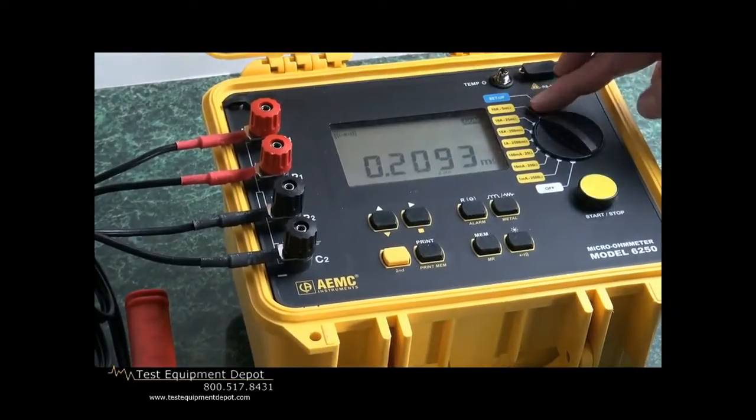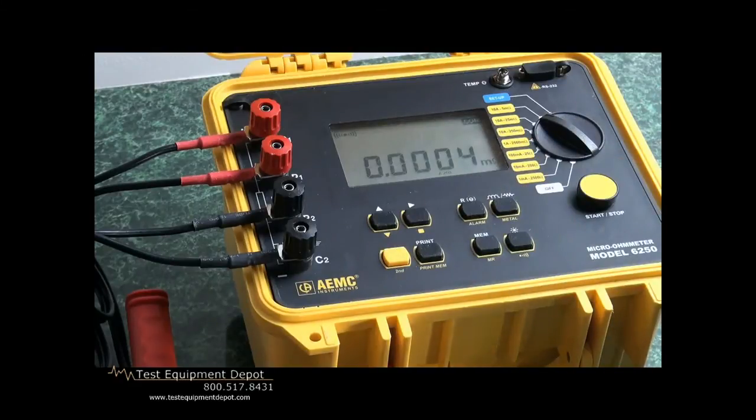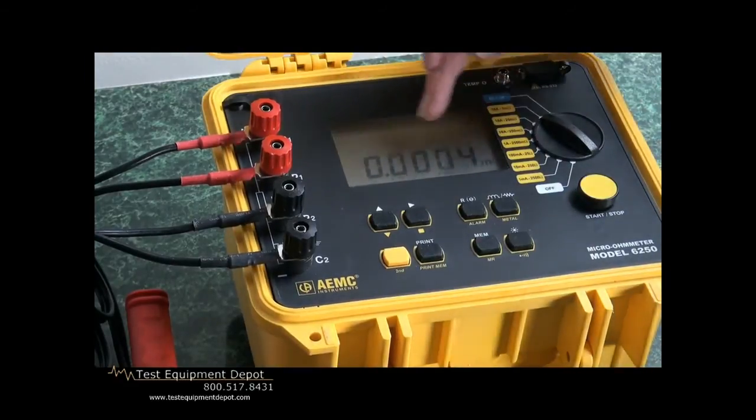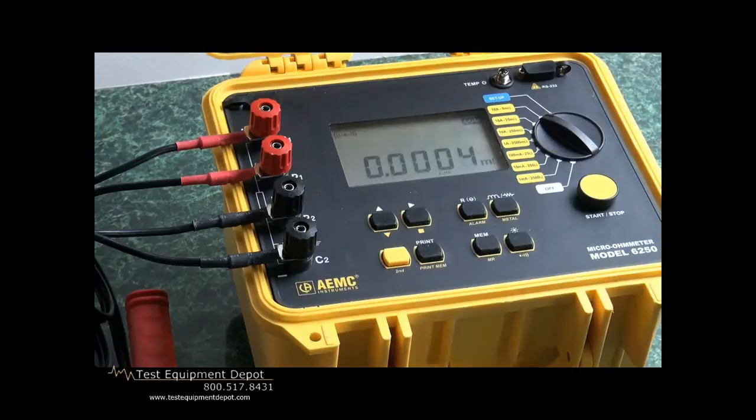Now we'll conduct a new test. We'll move it to the 10 amp position, and we will go ahead and test. This conductor is actually very good because it is 0.004 micro-ohms. That just demonstrates the sensitivity of this meter.